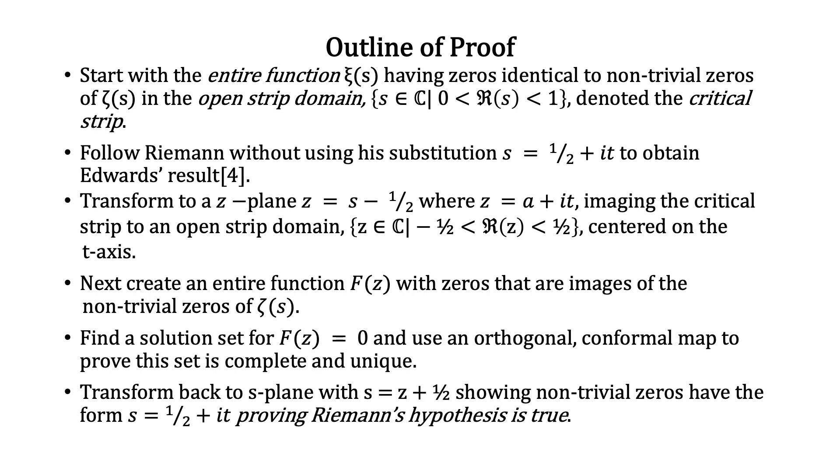Transform back to the s-plane with s = z + 1/2, showing non-trivial zeros have the form s = 1/2 + it, proving Riemann's hypothesis is true.